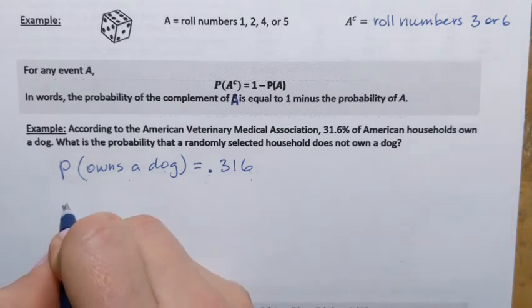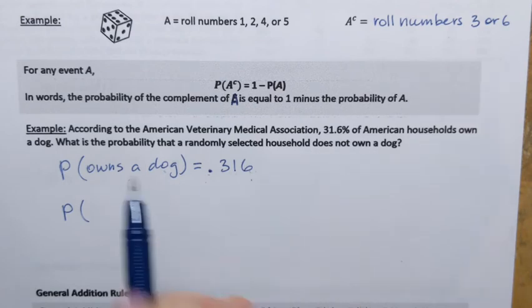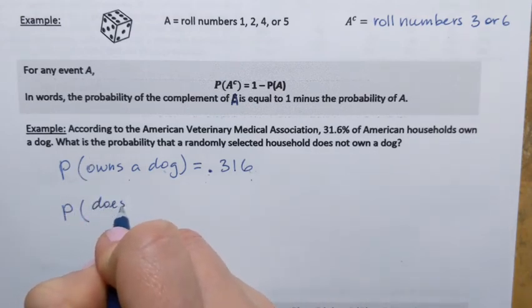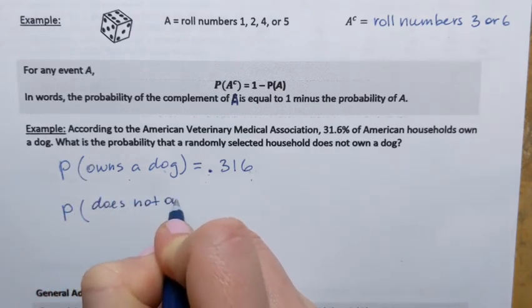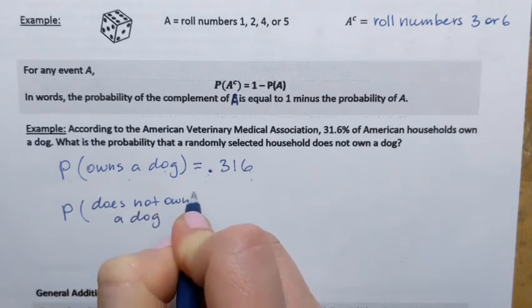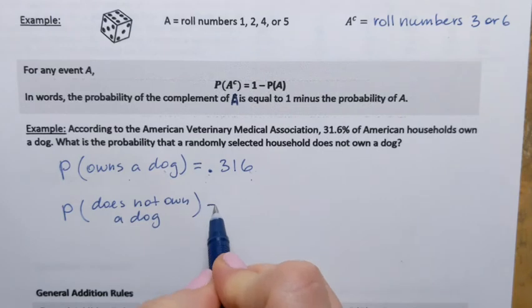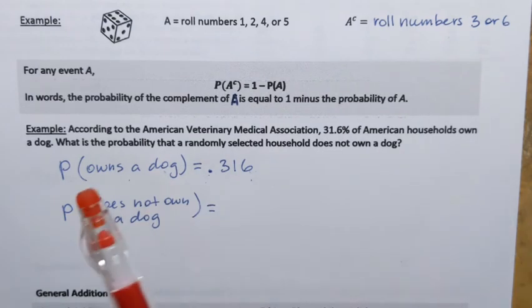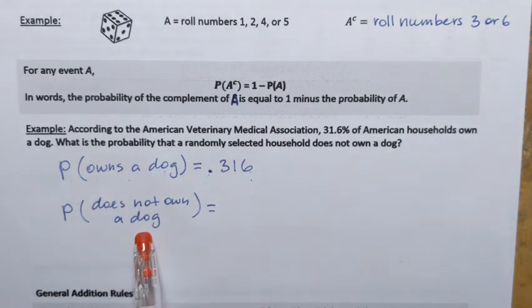But we need to find probability that household does not own a dog. Notice that those two events, household owns a dog and household does not own a dog, they're complements.